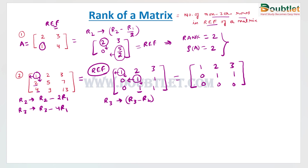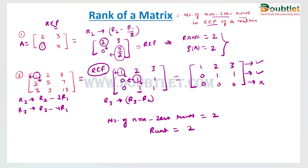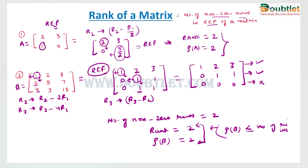Now we count the number of non-zero rows. The first row is non-zero and the second row is non-zero, but the third row is a zero row because all its elements are zero. So the number of non-zero rows is two, and the rank of matrix B is two. This fulfills the condition that rank is less than or equal to the number of rows.